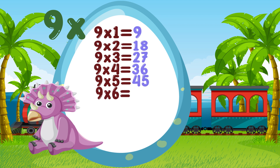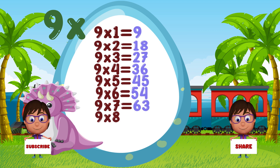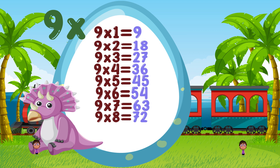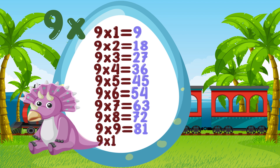9 times 6 is equal to 54. 9 times 7 is equal to 63. 9 times 8 is equal to 72. 9 times 9 is equal to 81. 9 times 10 is equal to 90.